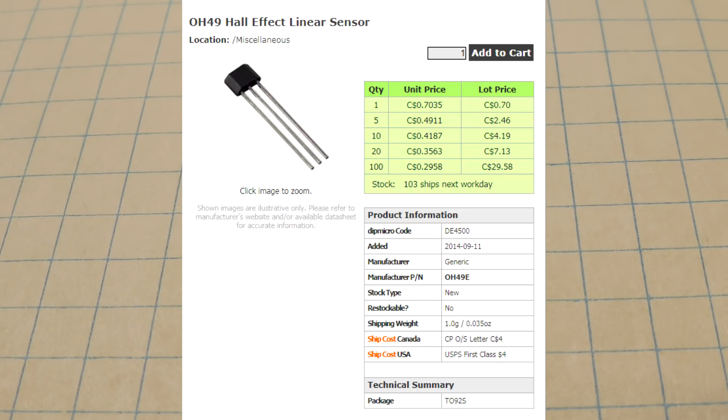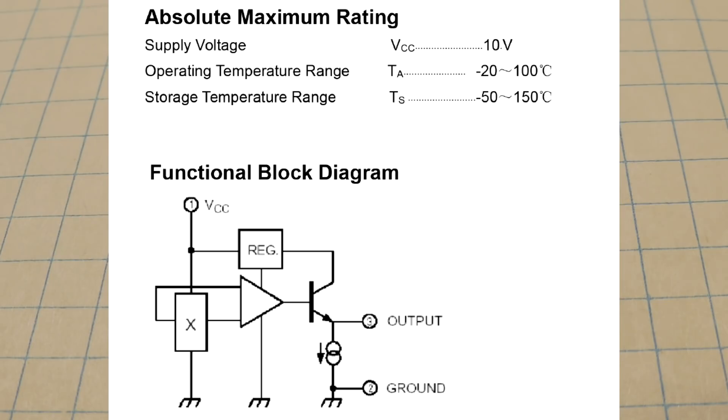It's available online. You can see it's pretty inexpensive. It's less than a dollar. And here's the schematic diagram of the OH49E. It has three pins. Pin 1 is VCC. Pin 2 is ground. And pin 3 is the output, the voltage output. Now it could run on 10 volts, but we're going to be running it on 5 volts in our project.